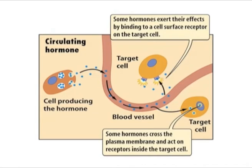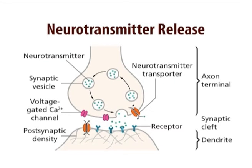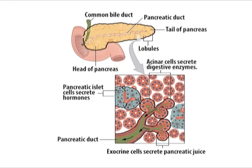The constitutive secretory pathway operates in all cells and leads to continual, unregulated protein secretion. However, some cells also possess a distinct regulated secretory pathway, in which specific proteins are secreted in response to environmental signals. Examples of regulated secretion include the release of hormones from endocrine cells, the release of neurotransmitters from neurons, and the release of digestive enzymes from pancreatic acinar cells.